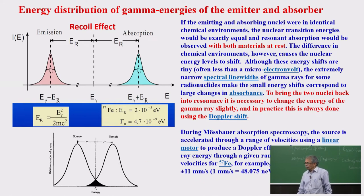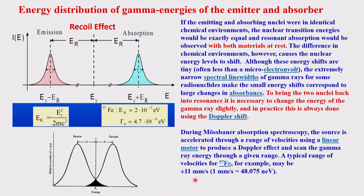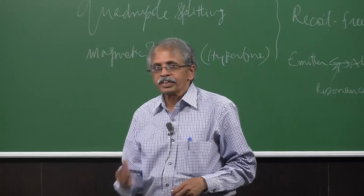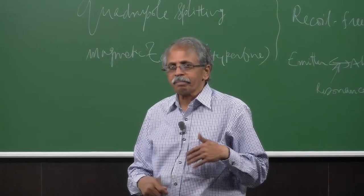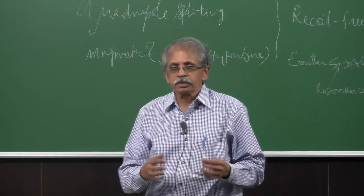For iron-57 (⁵⁷Fe), the source needs to move at speeds of roughly plus or minus 10 to 20 mm/s from the resting position to bring about resonance. This movement compensates for the different electronic environments of the Mössbauer nuclei in the source versus the sample. If there are several different nuclear environments in a compound or lattice, each one absorbs at a different frequency, and each can be matched by this Doppler scanning.